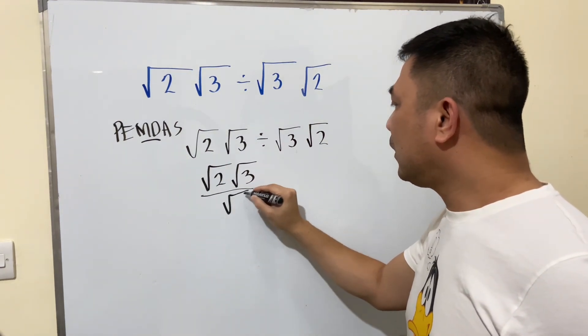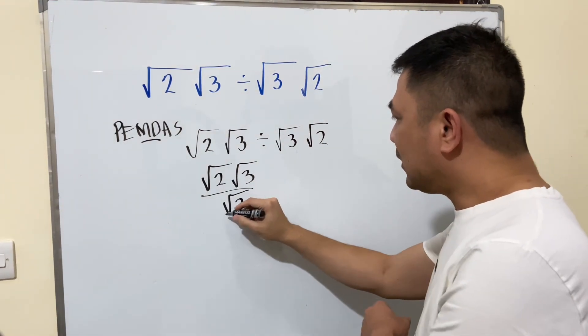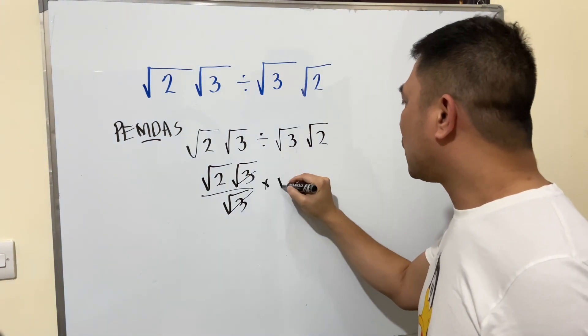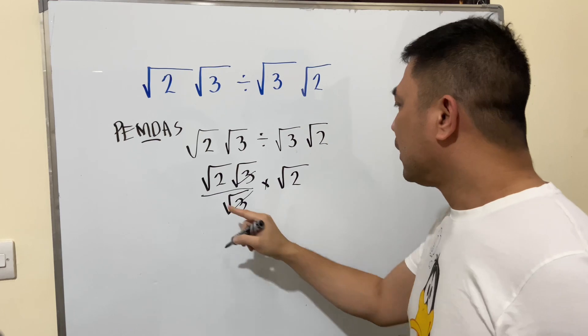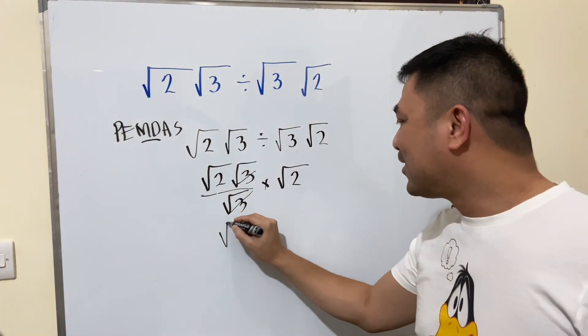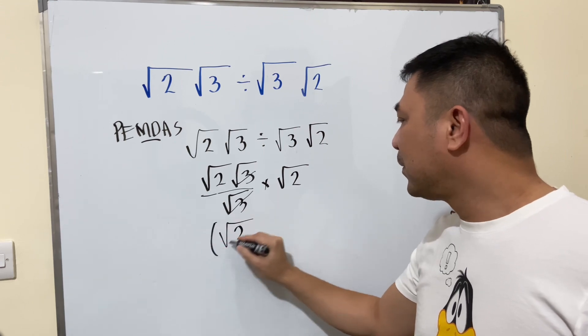Finally, we have square root of two and square root of two. We have square root of two squared. This cancels, so our answer is two. Okay, let's see.